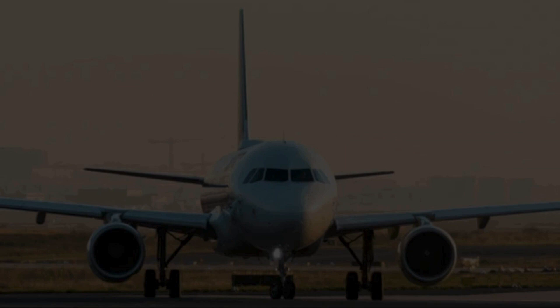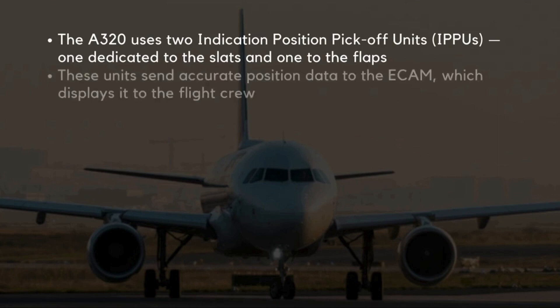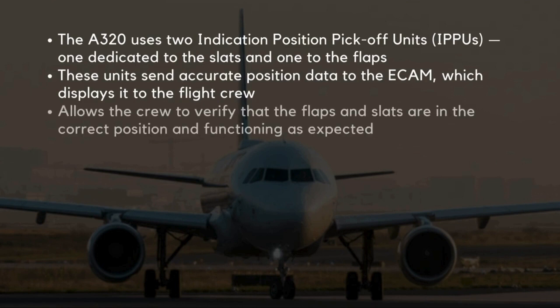Let's quickly discuss the indication systems that keep the flight crew informed of the flap and slat positions. The A320 uses two indication position pick-off units, one dedicated to the slats and one to the flaps. These units send accurate position data to the ECAM, which displays it to the flight crew. This real-time feedback allows the crew to verify that the flaps and slats are in the correct position and functioning as expected throughout all phases of flight.